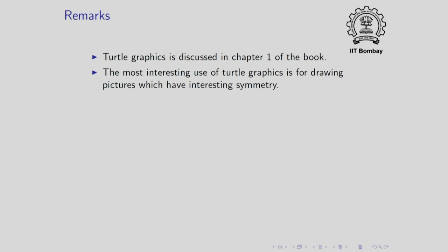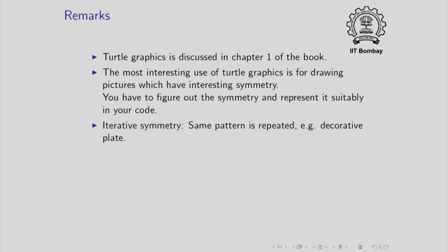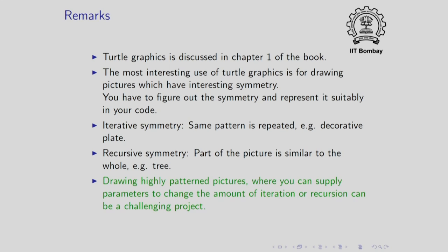So now I will just make remarks on what we have seen so far. Turtle graphics is discussed in the first chapter of the book. The most interesting use of turtle graphics is for drawing pictures which have interesting symmetry. You have to figure out the symmetry and represent it suitably in your code. We have seen two kinds of symmetry. One is iterative symmetry, in which the same pattern is repeated. This for example happened in drawing the decorative design for the plate. We have also seen recursive symmetry. In this case, the part of the picture is similar to the whole, as was the case for the tree. Let me just remark that drawing highly patterned pictures, where you can supply parameters to change the amount of iteration or recursion can be a very challenging project. That concludes this session in which we have seen turtle graphics and two interesting somewhat elaborate uses of the facilities available in turtle graphics.